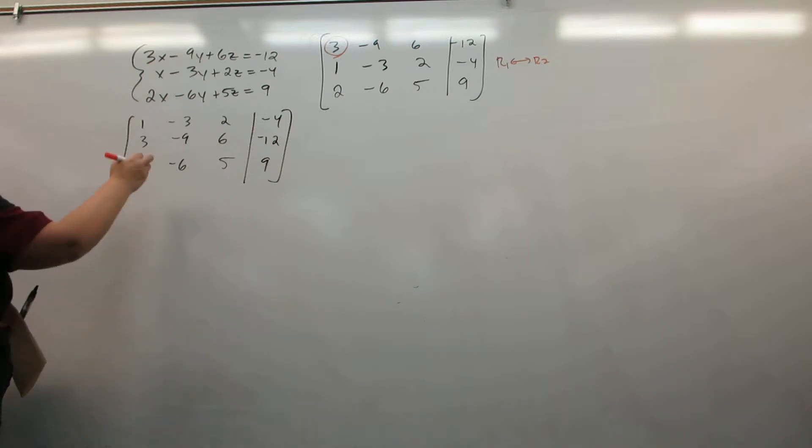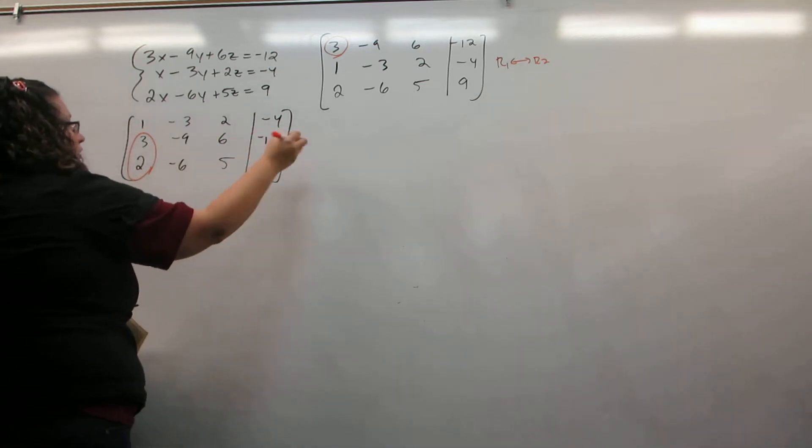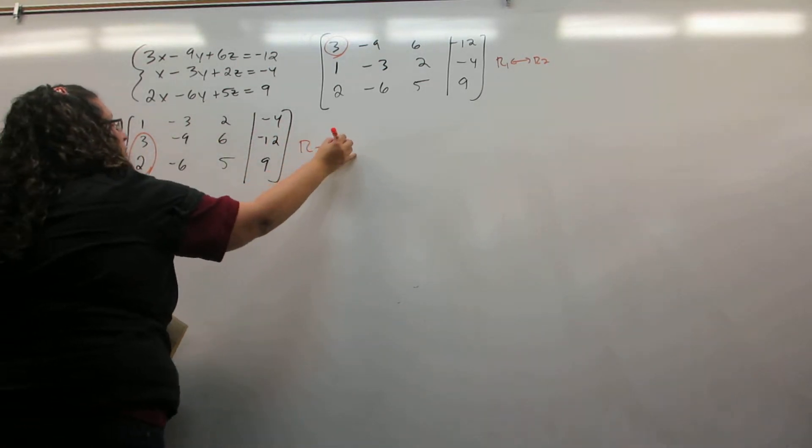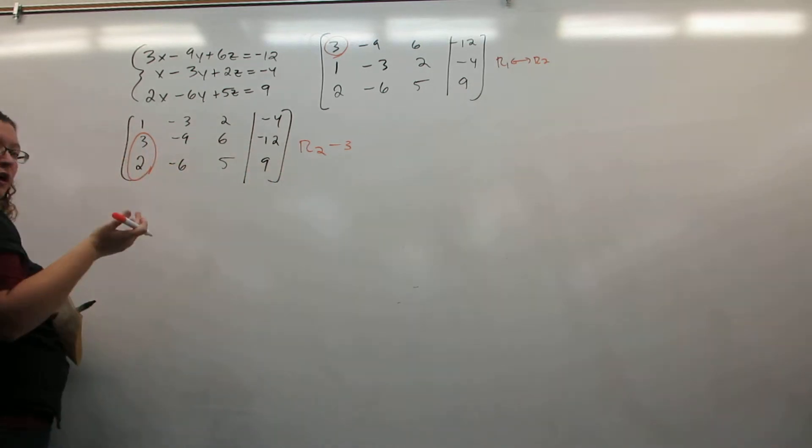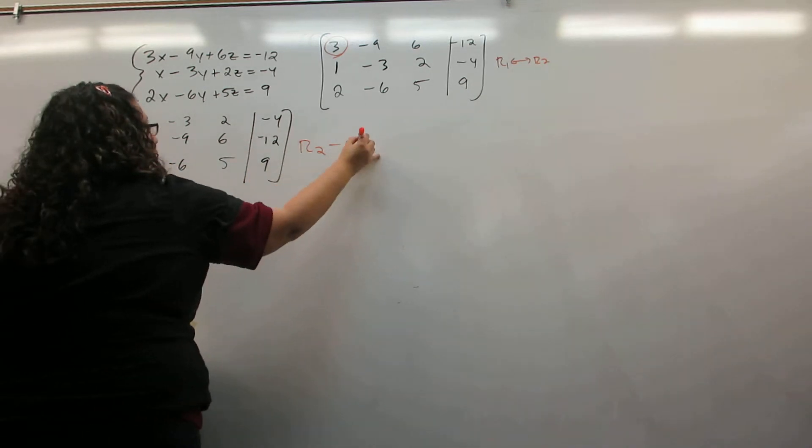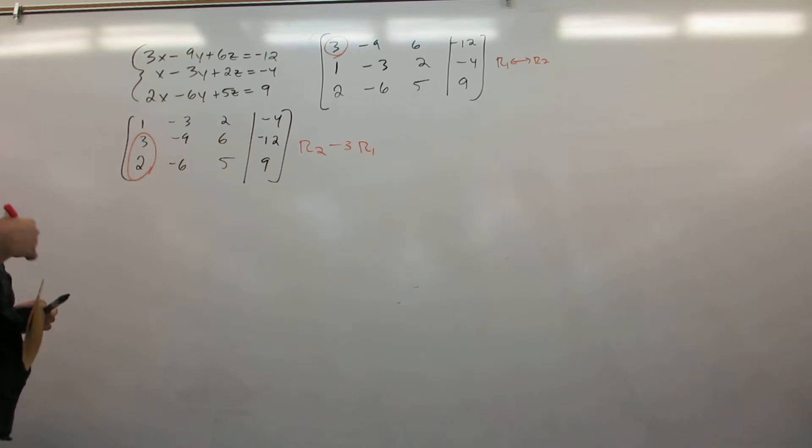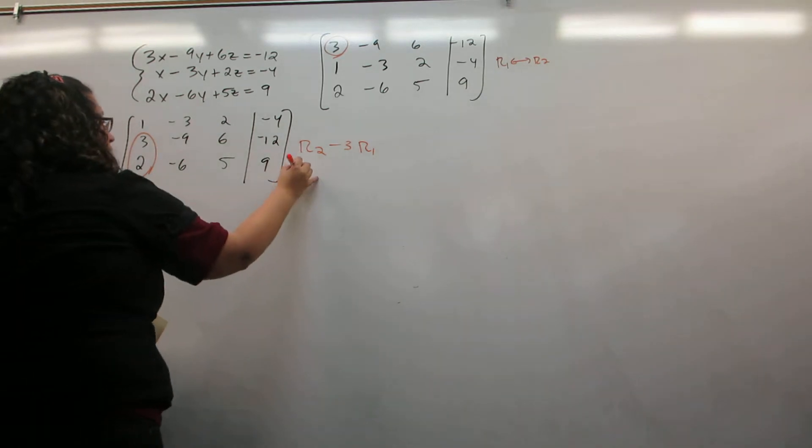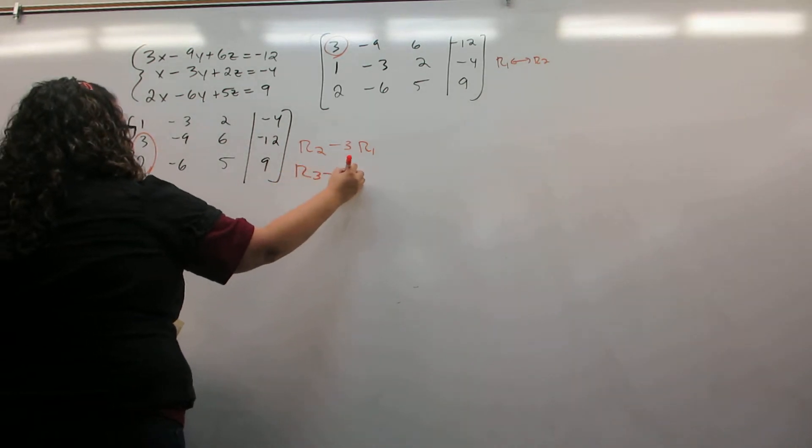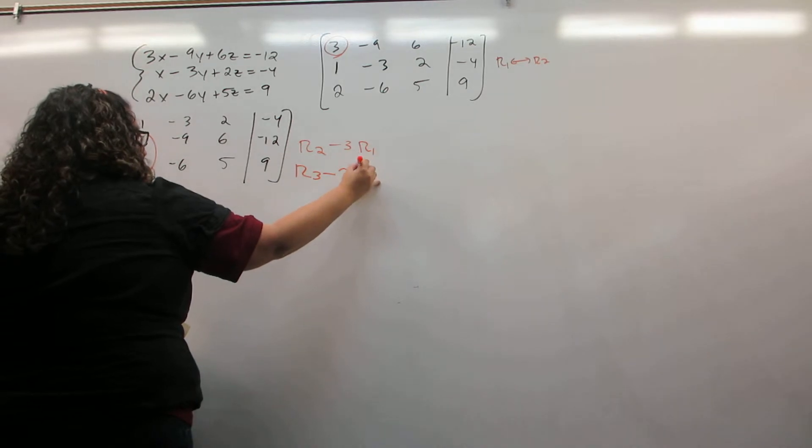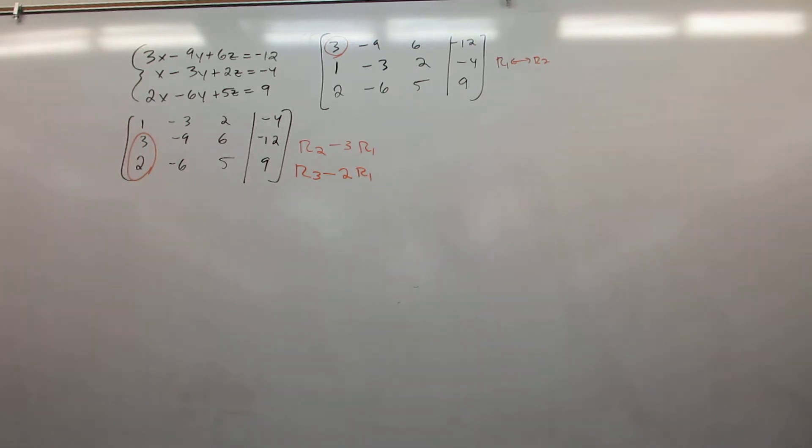Our next goal is to get zeros underneath that 1. We do this by doing R2, the row we're trying to fix, minus 3, subtracting the number that's already there, times row 1, the row with the 1 in it. So the row we're trying to fix, minus the number that's already there, times the row with the 1 in it.